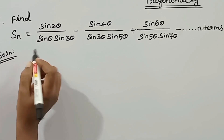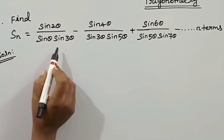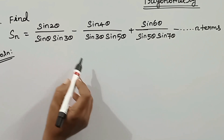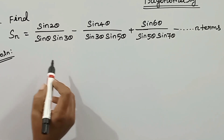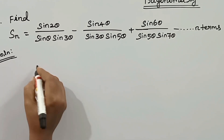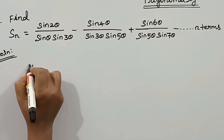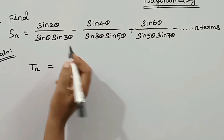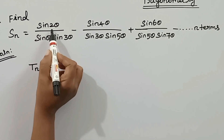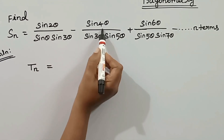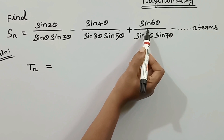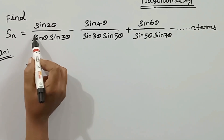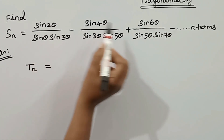First, we will use the difference method. We will get two terms of different types. We will find the general term, which means tn. The series is: sine 2 theta, sine 4 theta, sine 6 theta. These are the terms of the series. I will take positive, negative and positive signs.